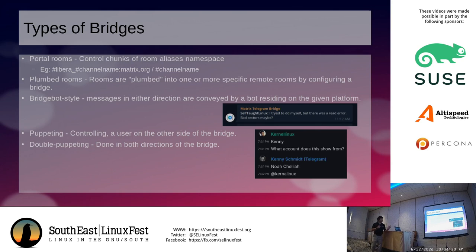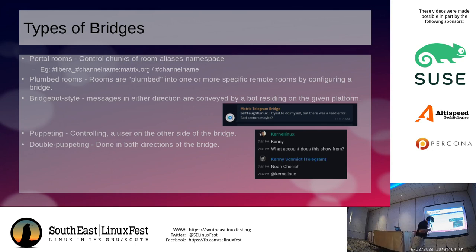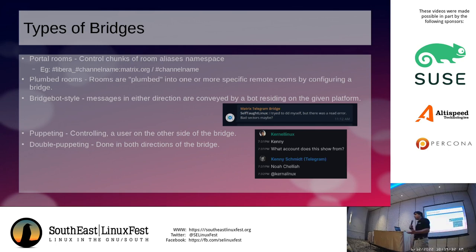The third style is the bridge bot style — there's a bot that exists on one or both sides, and it simply relays the message. This is the least appealing way of doing bridging because it's very obvious to everybody that it's a bridged room. In this example I'm bridging Telegram to Matrix, and it shows up as the Matrix Telegram bridge, then the username, then a colon, then the message — and the user's avatar is always that of the bridge. So it's the least desirable way, in my opinion, to bridge two rooms together.